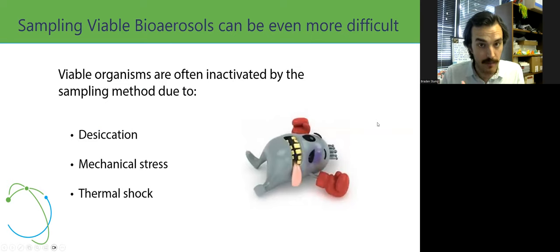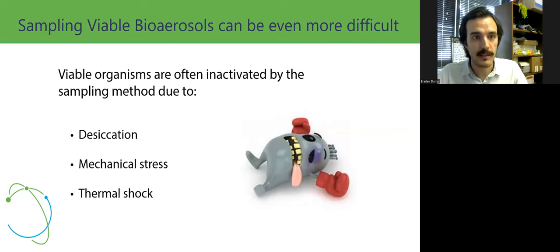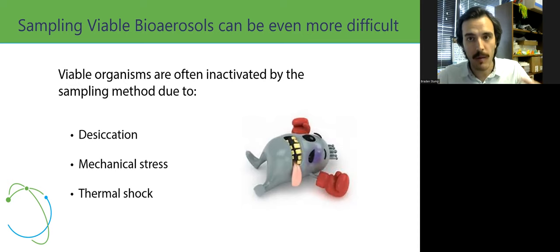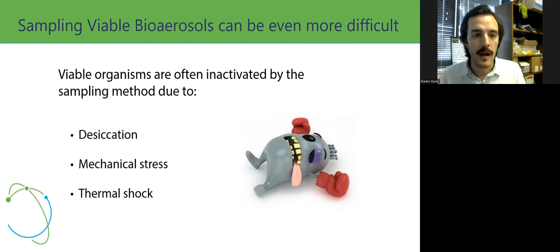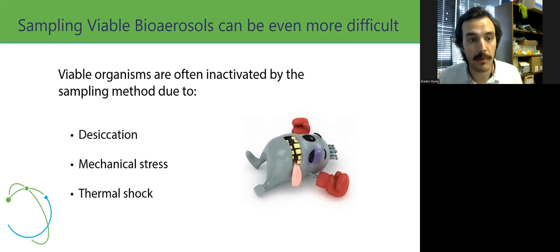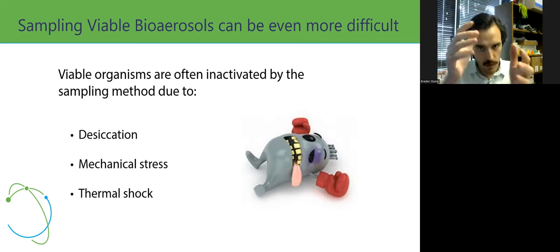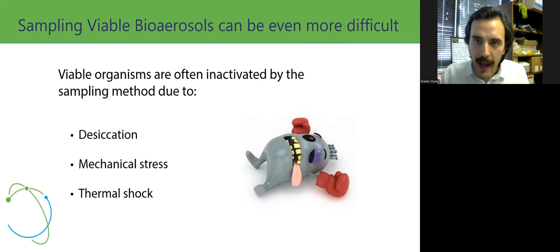Drilling down further, going from bioaerosols to viable bioaerosols — sampling something active and making sure it's not inactivated in the sampling method — you want to see transmission of a live bioaerosol. That can be even more difficult because many sampling methods can expose bioaerosols to desiccation, or drying out, mechanical stresses from being shot out of a nozzle or impinger to get a more concentrated sample, and thermal shock, since some methods require large amounts of heat to move smaller bioaerosols into something that can be captured or analyzed.